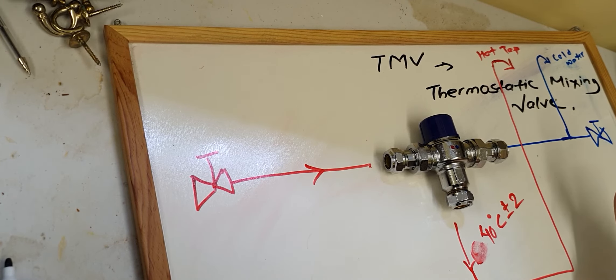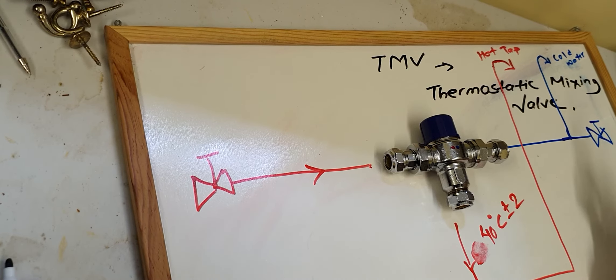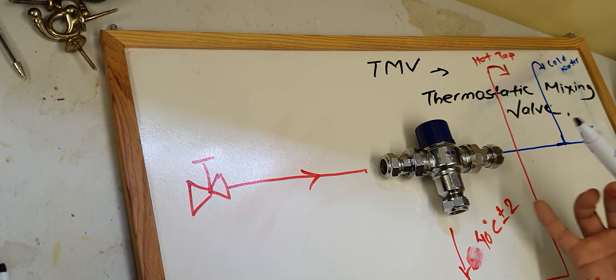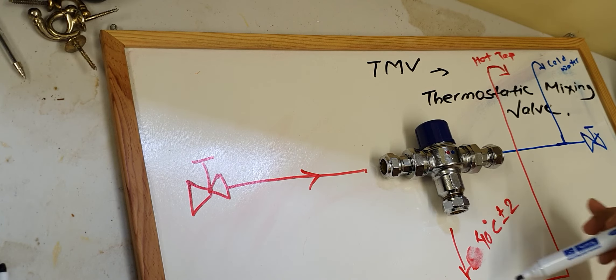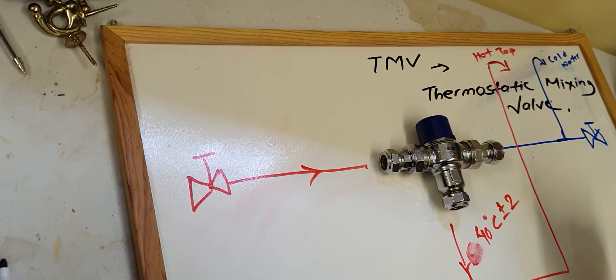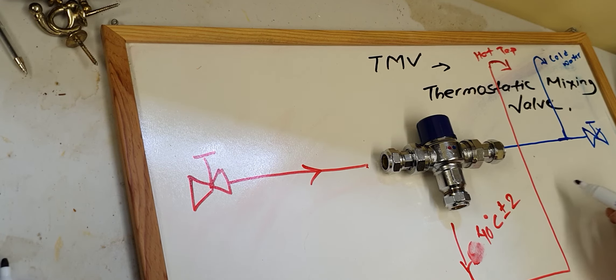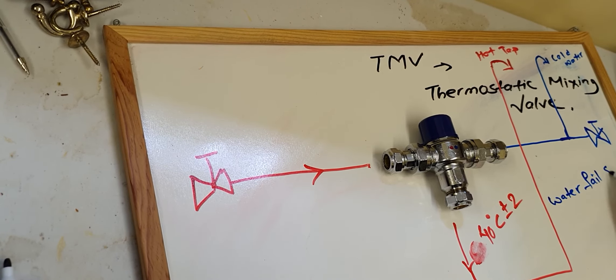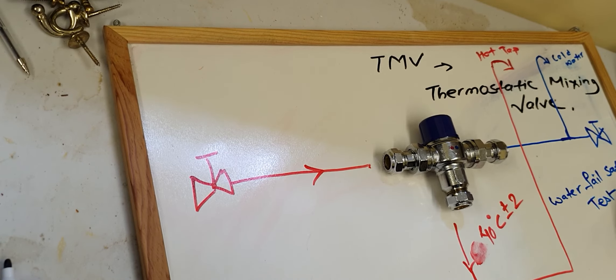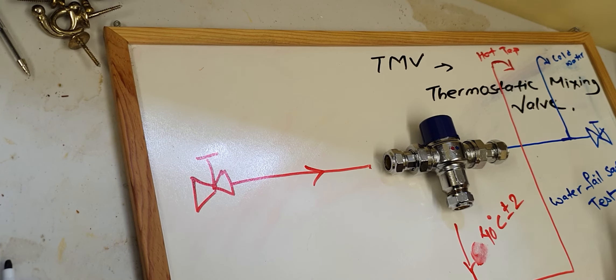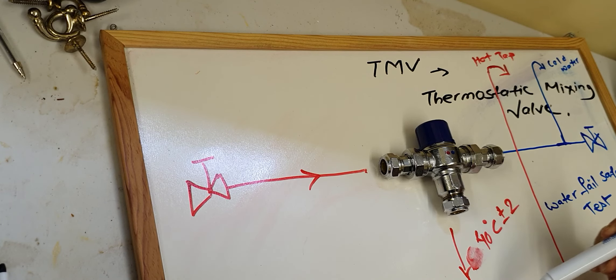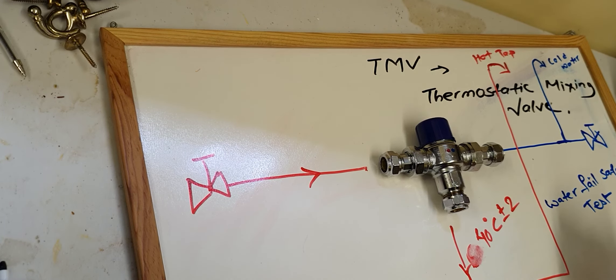You might be thinking, what if the cold water is off or if there isn't any cold water? What will happen to the TMV? Will really hot water come to the tap? No, it doesn't. The TMV should pass the water. This is a kind of fail safe test. If there isn't any cold water supply to the TMV, there won't be any hot water coming out from the hot water tap.